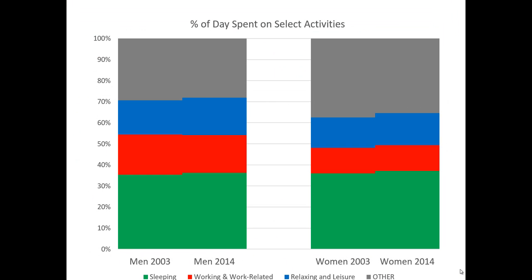In this example, I've simplified the structure of the data into four main categories across a 24-hour day: the percentage of time that people spend sleeping, doing work and work-related activities, doing relaxing and leisure activities, and some other activity. I divided the data set into men and women from 2003 to 2014.